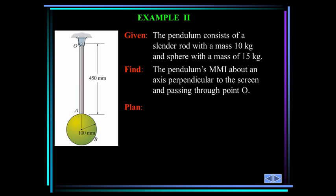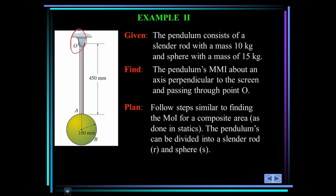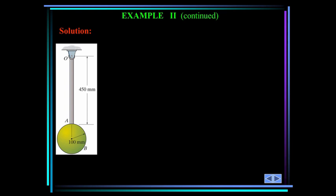Now we have a composite body. This pendulum consists of a slender rod with a mass of 10 kilograms and a sphere with a mass of 15 kilograms. Find the pendulum's mass moment of inertia about an axis perpendicular to the screen passing through fixed point O. We follow steps similar to finding the moment of inertia for a composite area as done in statics. The center of gravity of the rod is halfway down the rod, at 225 millimeters from point O. The center of gravity of the sphere, G sub S, is located 500 millimeters from point O. We'll use the parallel axis theorem and the composite body theorem.